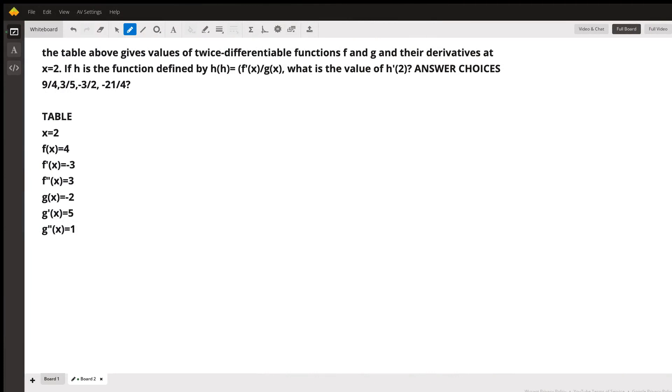Hi. So the table above, or I guess below in this case, gives values of twice differentiable functions f and g and their derivatives at x equals 2.